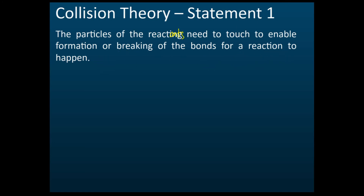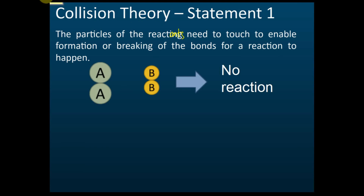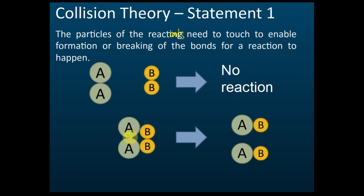This means if we have two reactants A and B, and if you want A to react with B, they must touch each other. If they are close but do not touch, there is no reaction. But if they collide and touch each other, then a reaction can happen and they produce a new product AB. So for a reactant to react, there must be a collision.